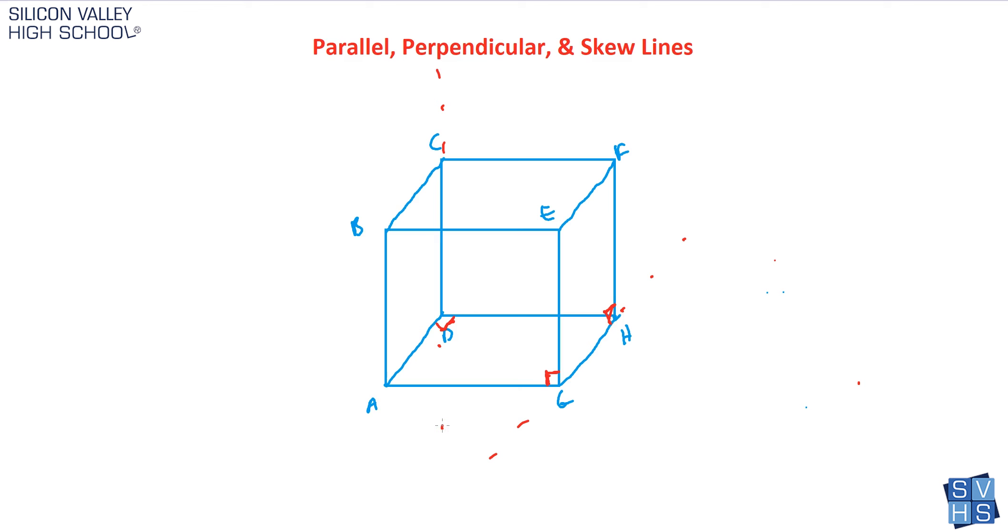So it's kind of tricky, actually, knowing which ones are parallel, perpendicular, and skew, but that's it. That's a very easy definition. Parallel has to be on the same plane and never cross. Perpendicular is on the same plane and it crosses at a 90. And skew lines are just not even on the same plane at all, and therefore they will totally never cross.